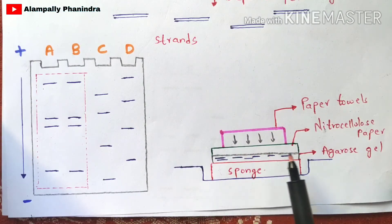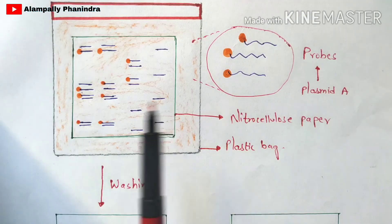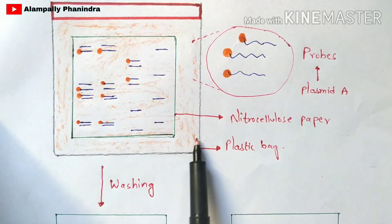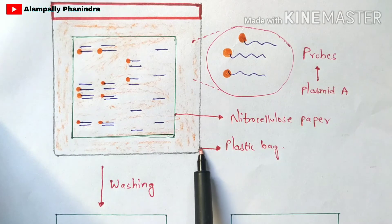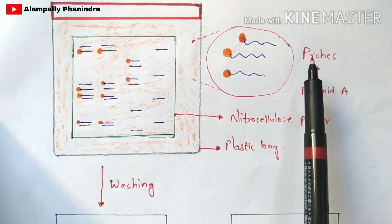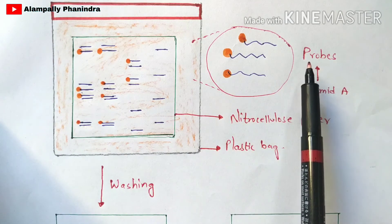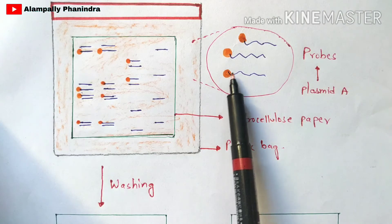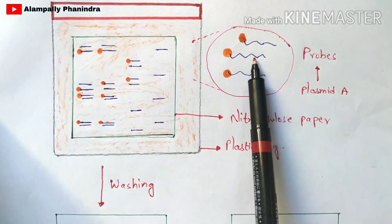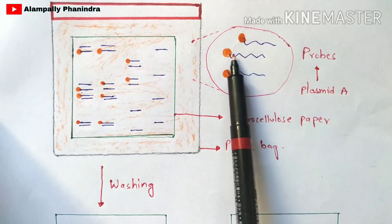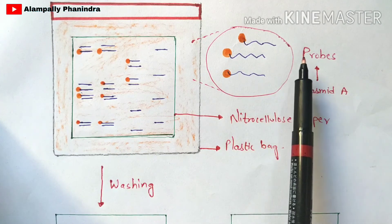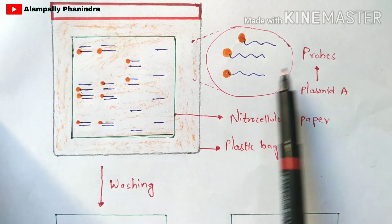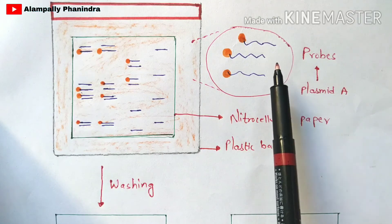You then remove the paper towels and take out the nitrocellulose paper, which now contains all the separated strands that have migrated from the agarose gel. Next, you take a plastic bag and add DNA probes to it. These probes contain a radioactive element — shown in orange — attached to the DNA strand or probe, shown in blue. These probes have been extracted from plasmid A. Probes are the complementary sequences of the template strand.